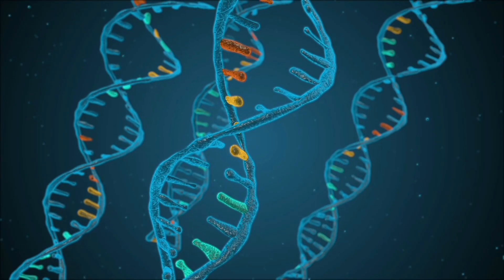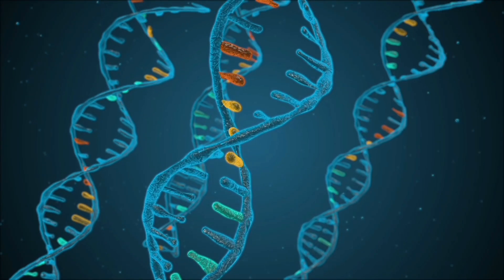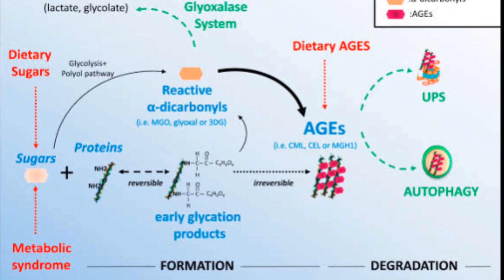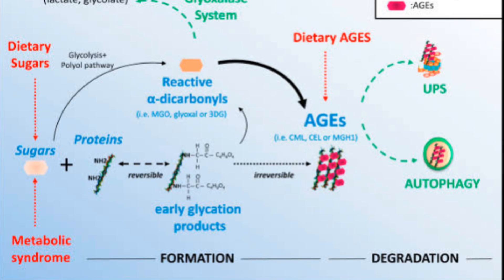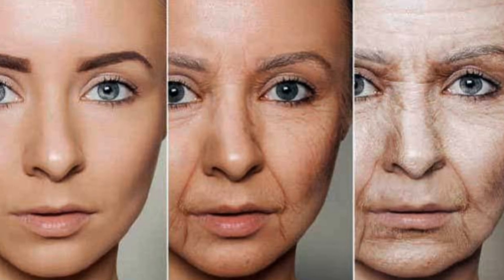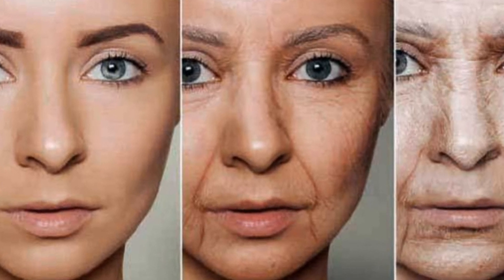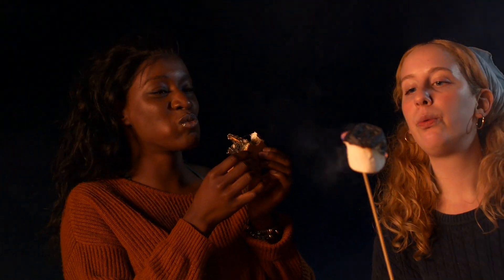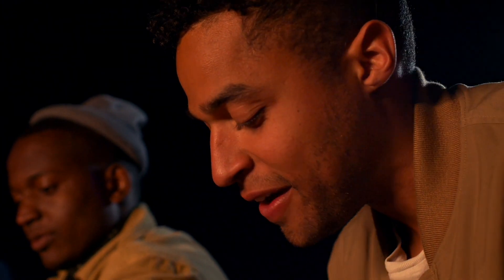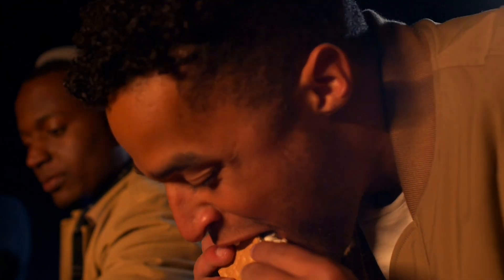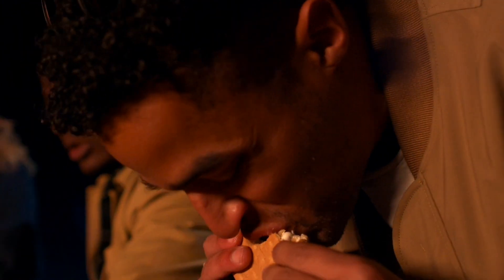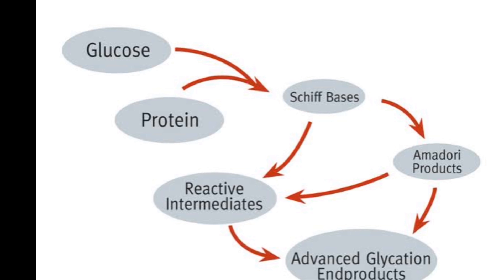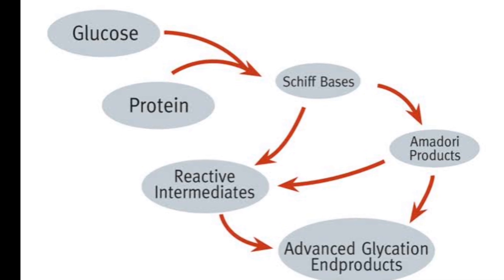In the complex terrain of human physiology, glycation arises as a biochemical process with profound implications for health and aging. Glycation occurs when sugars, particularly glucose, react with proteins, lipids, and nucleic acids in the body, leading to the formation of advanced glycation end products, or AGEs.